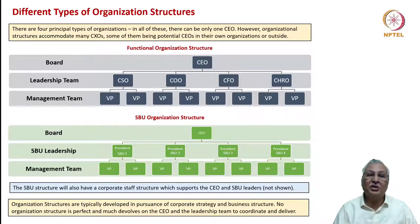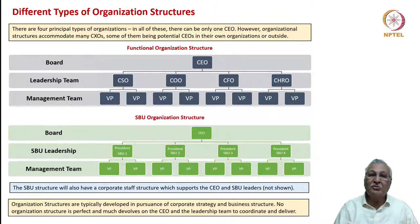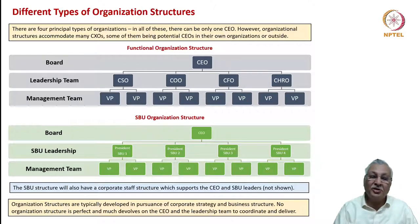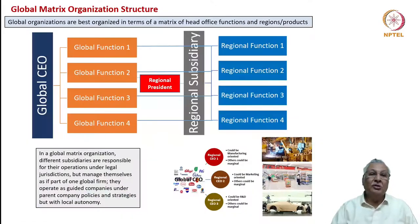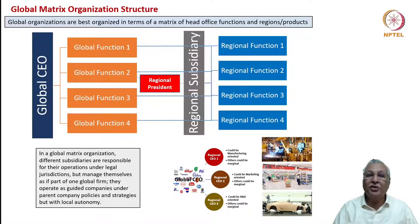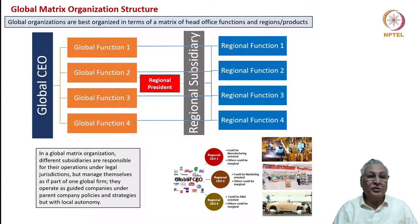These organization structures are developed based on the context and strategy of the firm. Every structure tries to solve some problems but also presents some problems. It is the CEO's responsibility to engage with various types of organization structures, coordinate with senior leaders, and manage the challenges those structures pose. Large multinational organizations have even more complex matrix structures involving functions and regions.